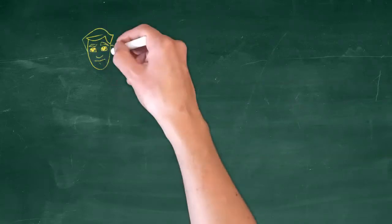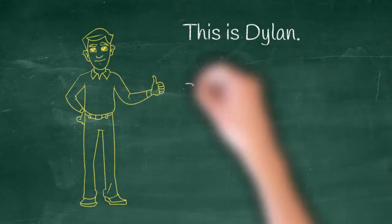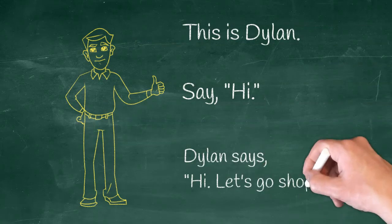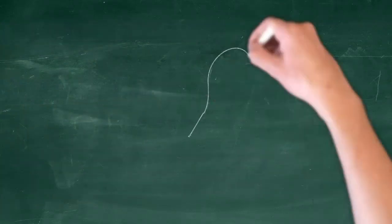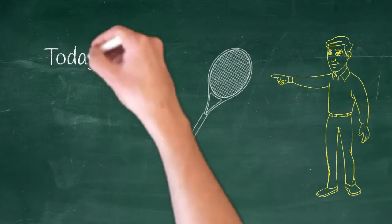This is Dylan. Say hi. Dylan says hi. Let's go shopping. Today, Dylan wants to buy a new tennis racket.